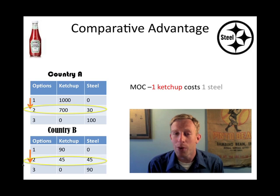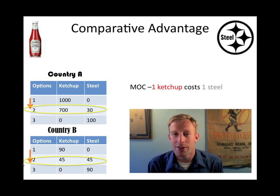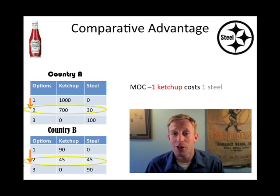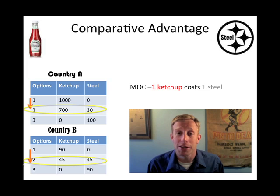But what if we could identify a way that each country could have more of both goods — in other words, they could consume beyond their ability to produce? This, of course, would be very interesting to them. So here is the proposal: one of these countries should specialize in producing ketchup, and that's all they should produce; and the other country should specialize in steel, and that's all they should produce. The question then becomes which country should specialize in which product, and that's where we get back to comparative advantage.